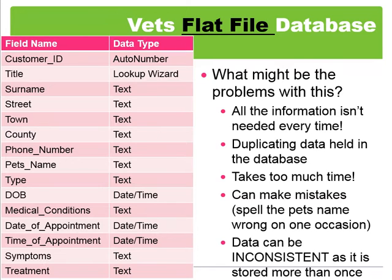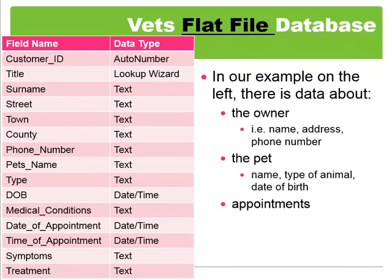For example, once we have the owner's surname and address, do we really need to type it in every time they visit the vets? This could also make data inconsistent or wrong, as it only takes a simple mistake — such as typing the town in wrong or misspelling the surname — for the database to become messy and difficult to analyze. We need to think about how we could break this down.